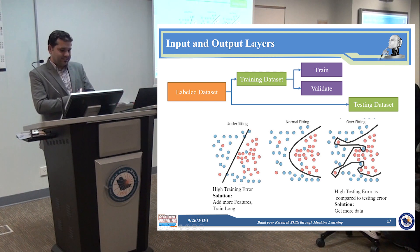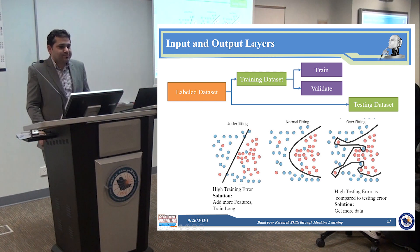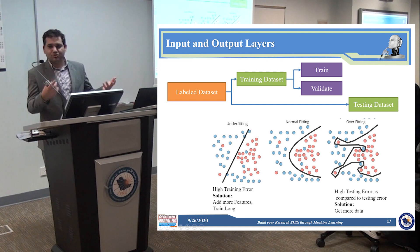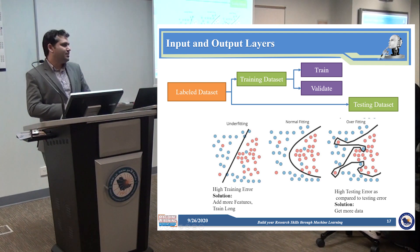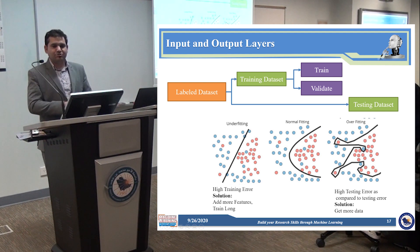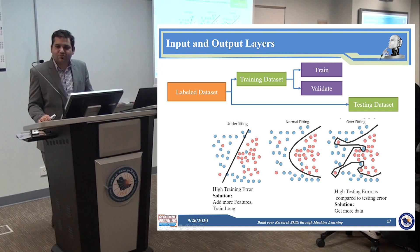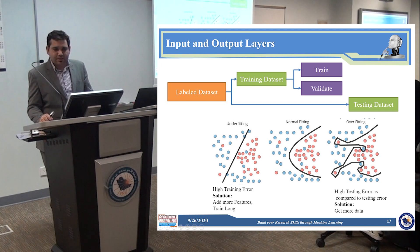You need to have labeled data. When you do the experiments, you need to divide the data into two parts from a research perspective: the training part and the testing part. Normally, they used to have like 80 percent for the training and 20 percent for the testing.